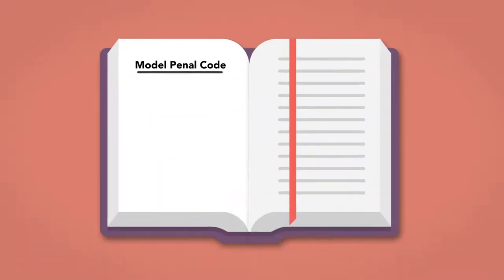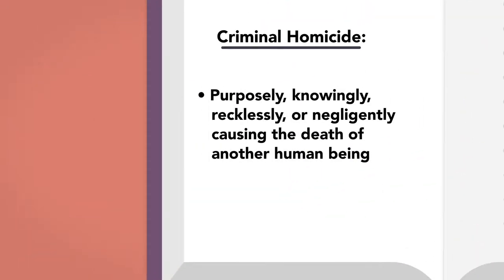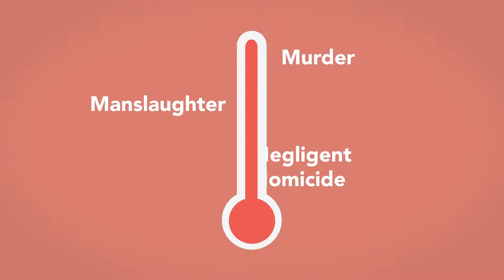The Model Penal Code defines criminal homicide as purposely, knowingly, recklessly, or negligently causing the death of another human being. Degrees of homicide include murder, manslaughter, and negligent homicide.